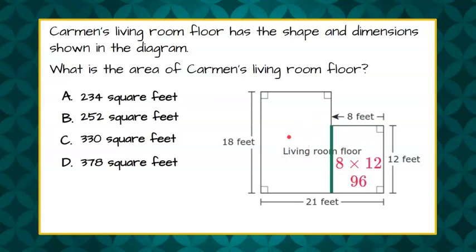Now to find this side of the living room we know that this whole side is 21 and this little side is 8. So this section right here is 8, so 21 subtract 8 is 13.